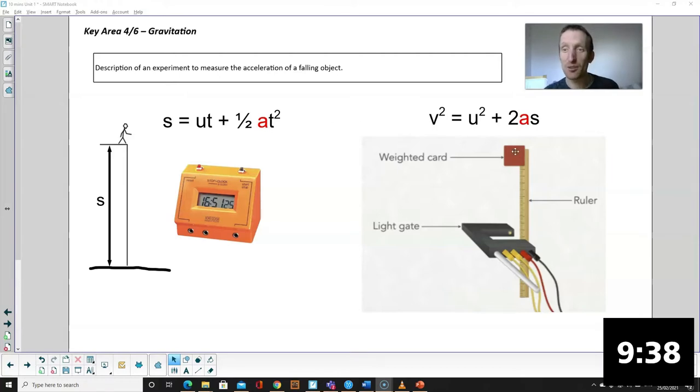Similarly, you could drop a bit of card through a light gate, similar idea. You know the starting velocity is zero, you know how far it falls, you measure the final velocity with the light gate and use one of your equations of motion, rearrange it for a.